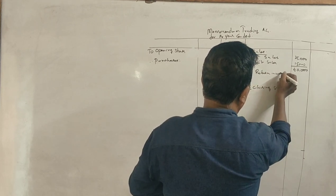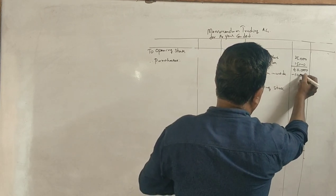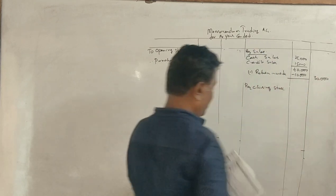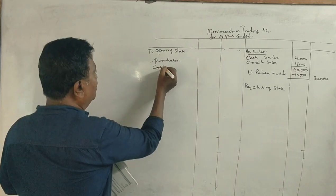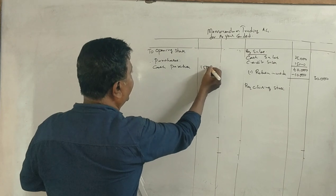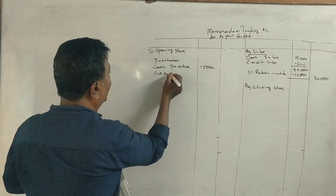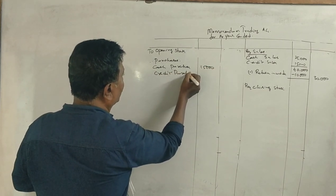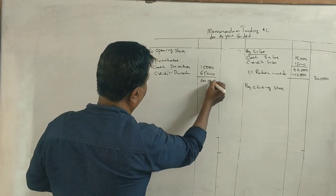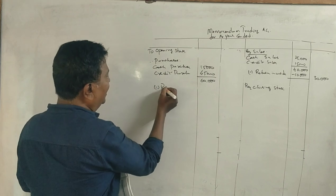Next, purchases: cash purchases and credit purchases total $60,000. Returns outwards need to be deducted.